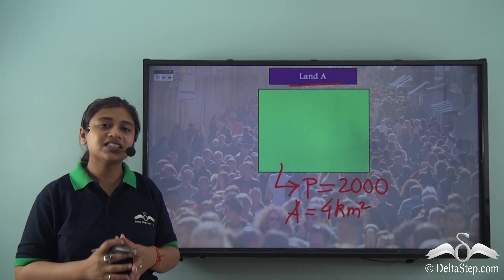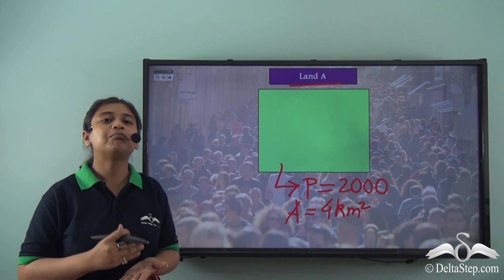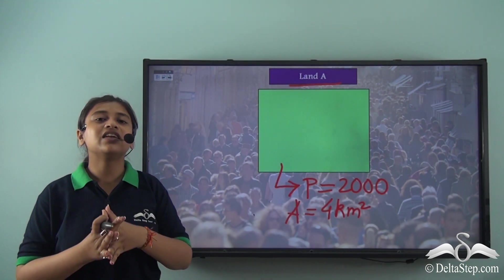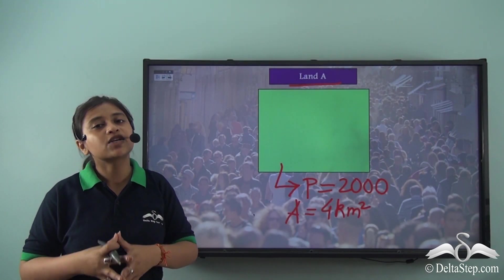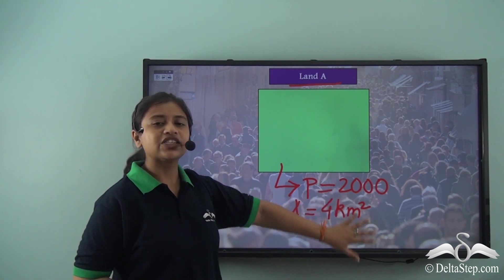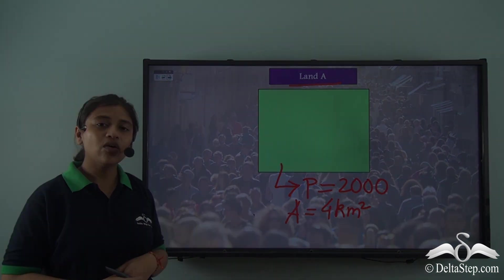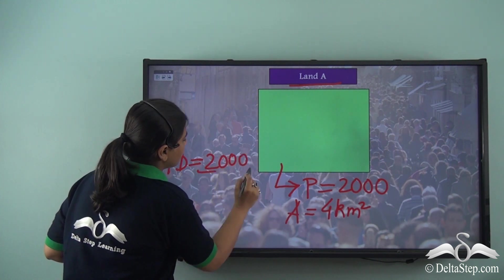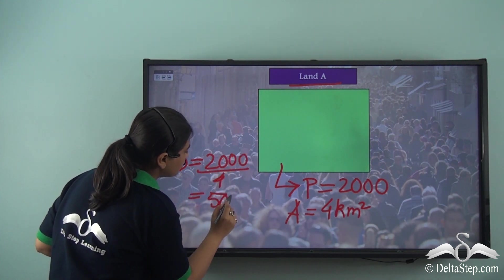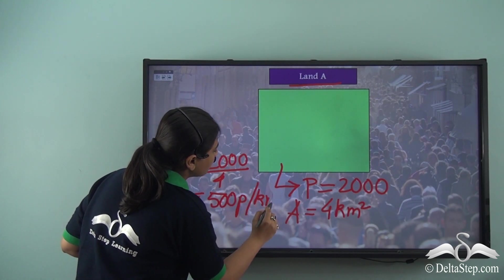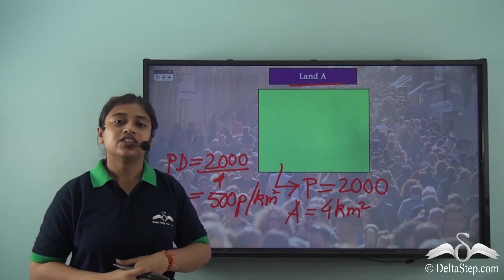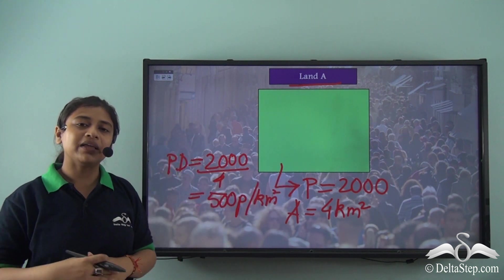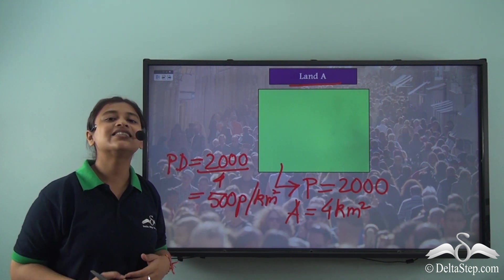The capacity to hold people in per unit square kilometer of Land A is three hundred, which means the land can support three hundred people per square kilometer. However, the current situation does not match this capacity. The new population density shows that there are five hundred people per square kilometer living in Land A. That means it has already exceeded its capacity.